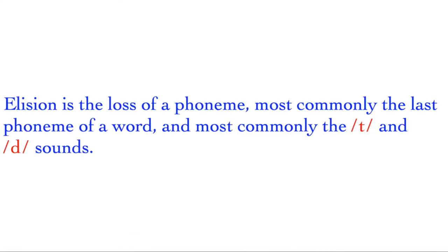Elision is the loss of a phoneme, most commonly the last phoneme of a word, and most commonly the /t/ and /d/ sounds.